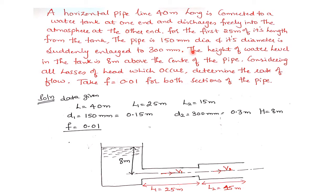He has asked us to consider all the losses which occur in the pipe and calculate the rate of flow, that is discharge. As per this problem, we have drawn the sketch here. The horizontal pipeline has a total length of 40 meters and is connected to a water tank. For the first 25 meters from the tank, the diameter of the pipe is 150 mm. Its diameter is then suddenly enlarged to 300 mm.